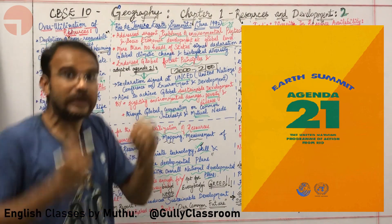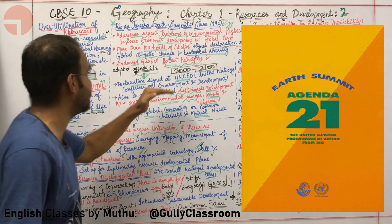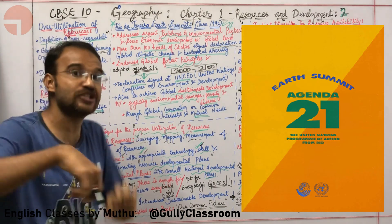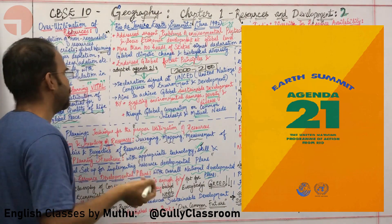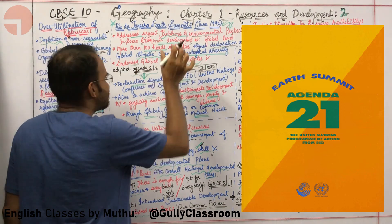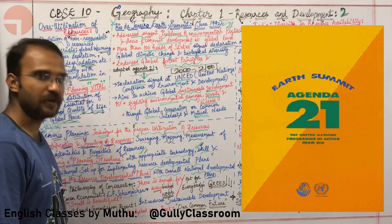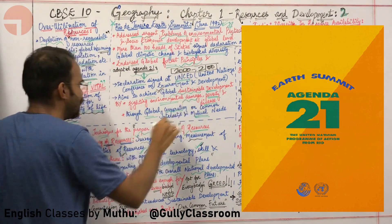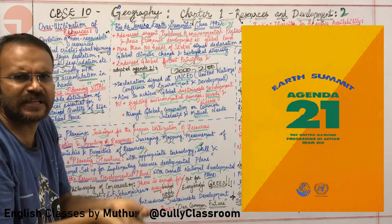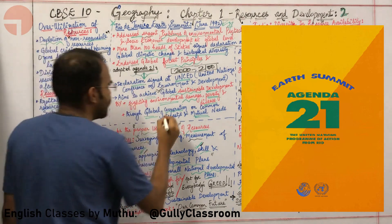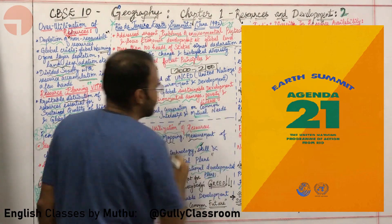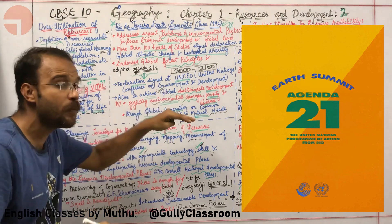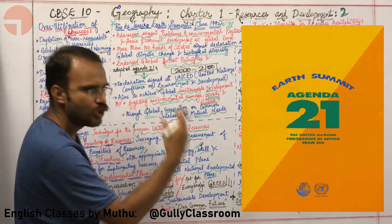Agenda 21 is a declaration signed at UNCED — the United Nations Conference on Environment and Development. It aims to achieve global sustainable development by fighting environmental damage, poverty, and disease through global cooperation on common interests and mutual needs.